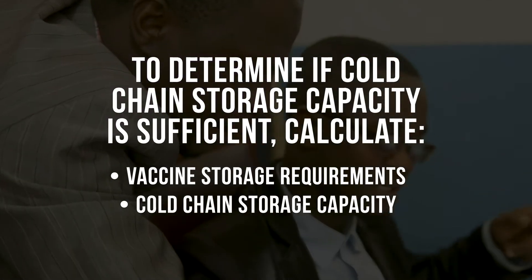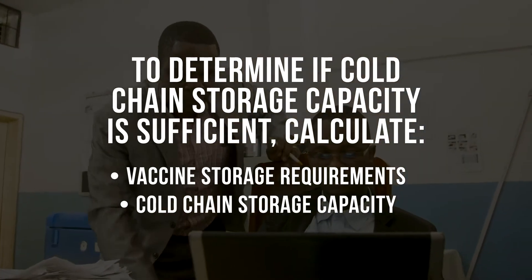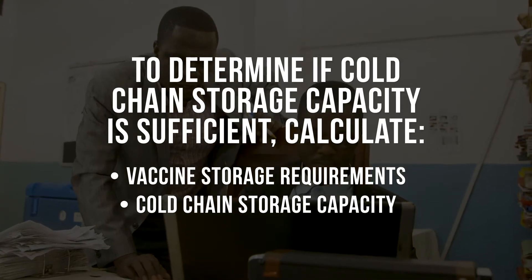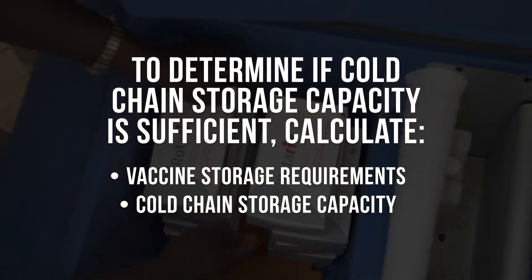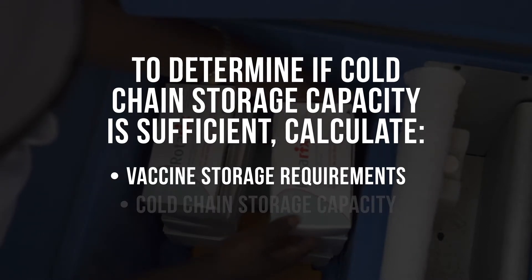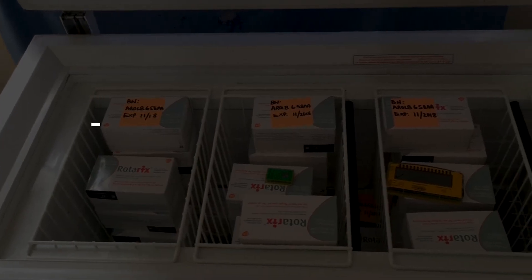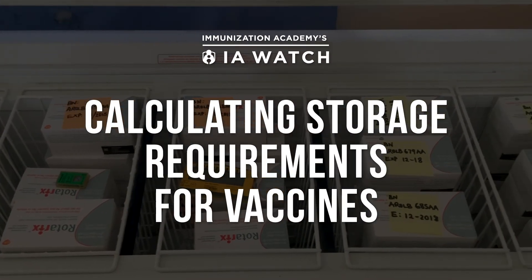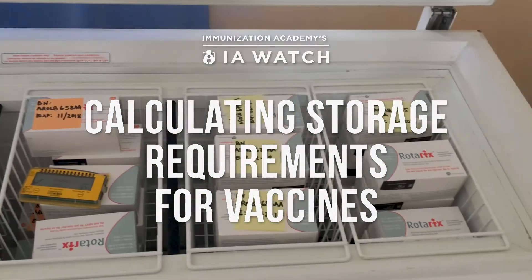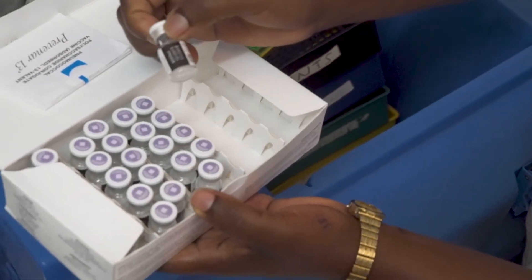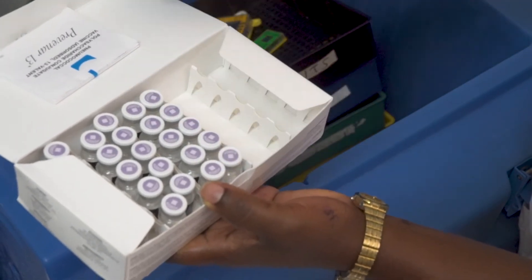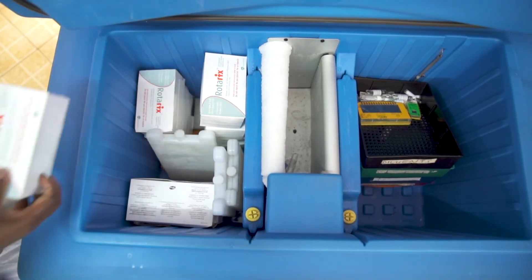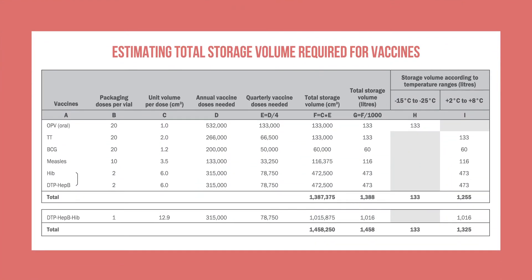If the storage volume required for your vaccines is greater than your existing cold chain storage capacity, you have a capacity issue that will need to be addressed. In this video, we will focus on calculating storage requirements for vaccines. To calculate the vaccine storage requirements, you will calculate the storage volume needed for each type of vaccine expected and then add those estimates together. Let us use this table to walk through the calculation.